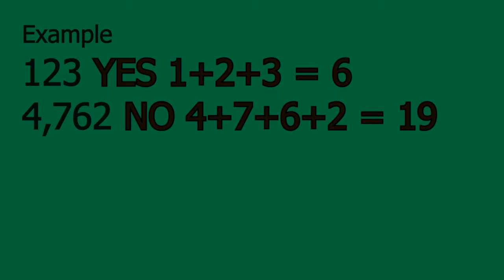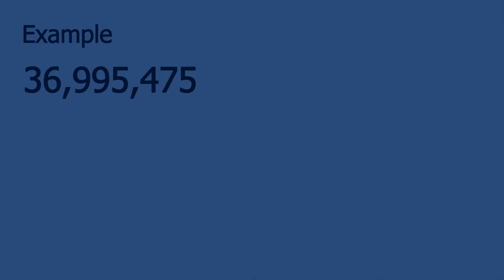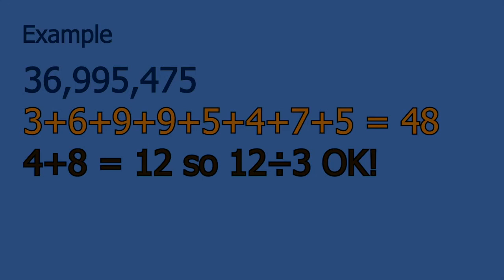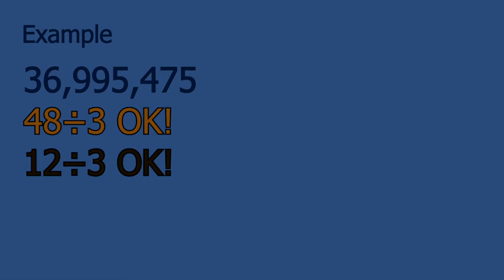Now let's look at a crazy big number: 36,995,475. When we add the digits together — 3 plus 6 plus 9 plus 9 plus 5 plus 4 plus 7 plus 5 — we get 48. Let's say we're not sure if 48 can be divided by 3. Here's the lovely part: we can use the same rule and test 48. 4 plus 8 equals 12, and we know from experience that 12 can be divided by 3. Since 12 is divisible by 3, we know 48 is divisible by 3, and therefore the original number 36,995,475 can be divided by 3 as well.